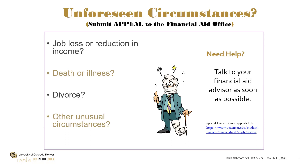Reasons for appeal include job loss, reduction of income, death of a parent or household member, illness, medical expenses not covered by insurance, or divorce or separation — in which case they can consider removing one parent's income information. There are other circumstances too. If you have some form of hardship, reach out to the financial aid office and let them know, so they can see if they can make you more aid-eligible.